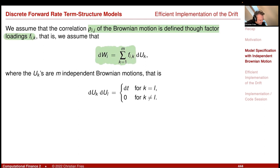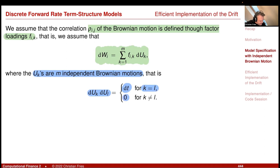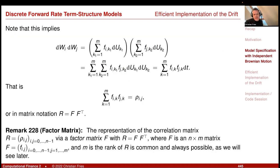So dW_i equals the sum of F_ik duk, where the duk's are m independent Brownian motions. We have that duk dul equals dt if k equals l, and zero for k not equal to l. For the dW's, we had dWk dWl equals rho_kl dt, where rho_kk equals 1. This implies a relation between the factors F_ik and my correlation.